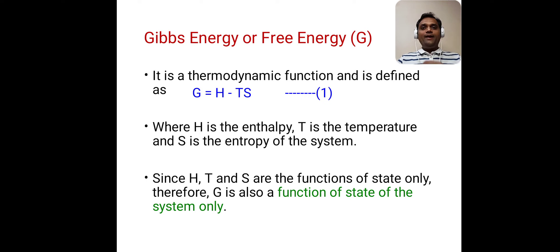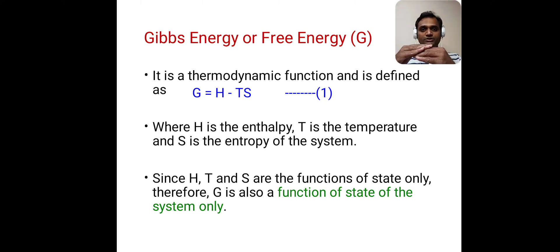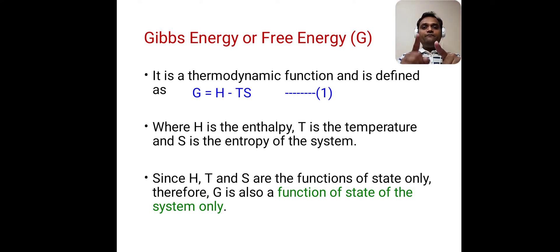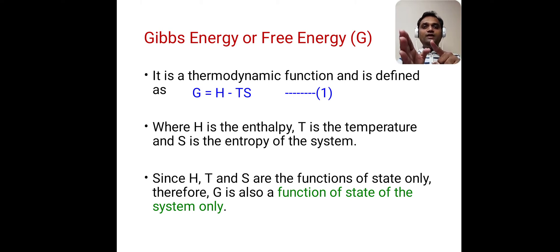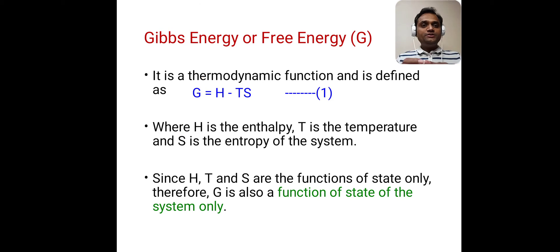A state function is defined as a function which depends upon the initial state and final state of the system. The opposite term is path function. A path function is defined as a function which depends upon the path followed by the system. So state function and path function are opposite terms.